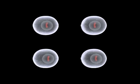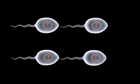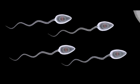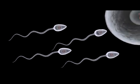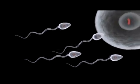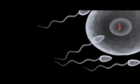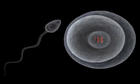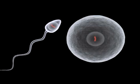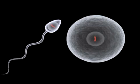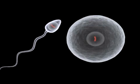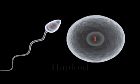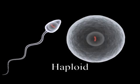Thus, in order for diploid organisms to reproduce sexually, they must produce sex gametes that have just a single copy of each homologous chromosome, so that the zygotes they produce are merely diploid like the parents. Cells like sex gametes, which have a single copy of each homologous chromosome in their nucleus, are referred to as haploid.